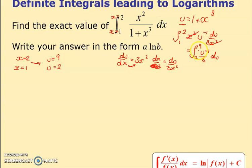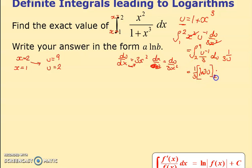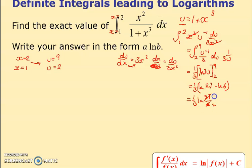The slight adjustment is the limits. Integrating u to the minus 1 gives log u, and with the factor of one third it's one third log u. Evaluating between 2 and 9: putting in 9 gives a third of log 9, putting in 2 gives a third of log 2. Combining: a third of log 27 over 6, which simplifies to a third of log 9 over 2.